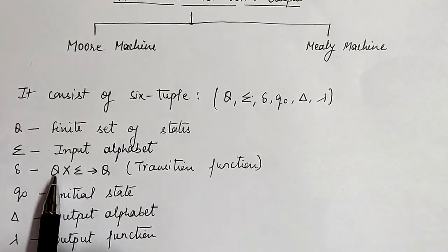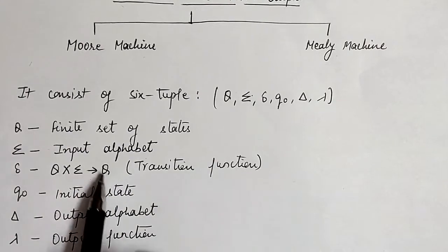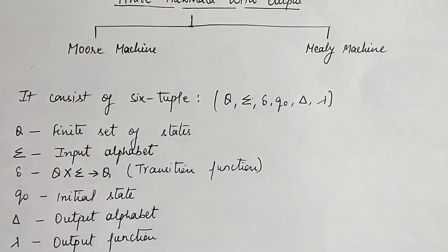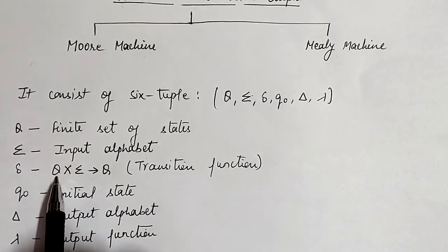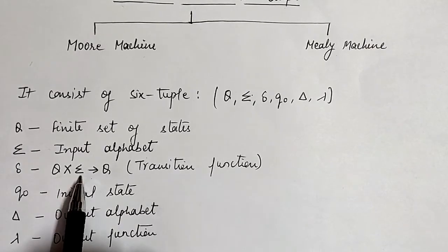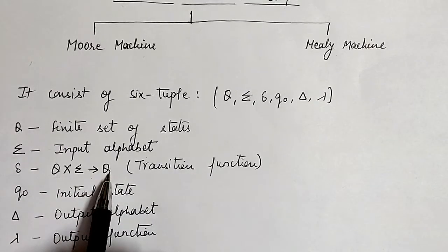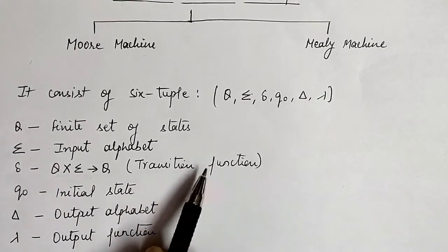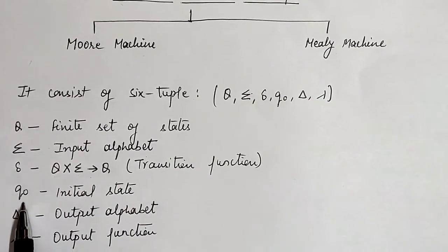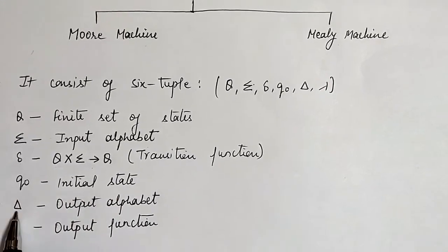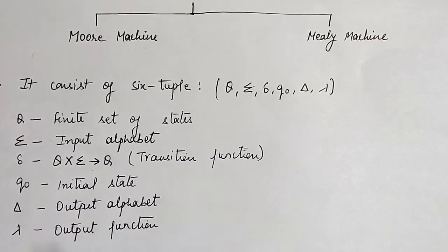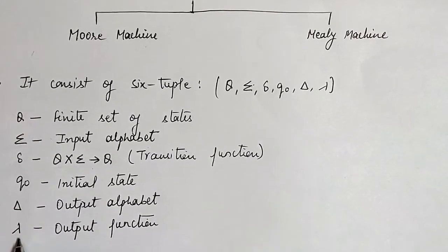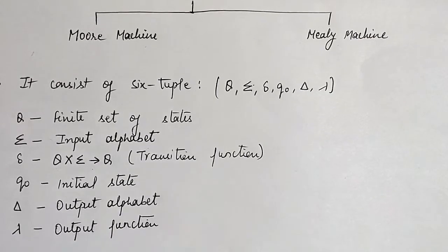Then we have delta, which is a transition function calculated from Q cross Sigma, which gives the next state. This means that depending upon the current state Q and the input Sigma, we get another state. Then q-naught represents the initial state. Capital Delta represents the output alphabet, meaning the symbols which are supposed to be as output.